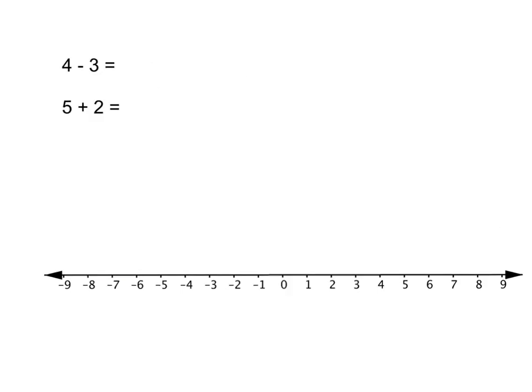Doing addition and subtraction on the number line is going to work exactly the same way as it always has. Let's go back to work you would have done in grade 1. What is 4 minus 3? If I start at 4 and I subtract 3, I have to go 3 steps back, I will end up at 1.